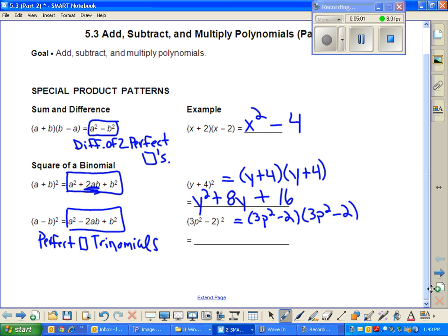I'm going to square 3P squared. You know when you square something, it's like you take your time itself, right? 3P squared times 3P squared is 9P to the fourth. You square the last thing. 2 times 2 is 4.